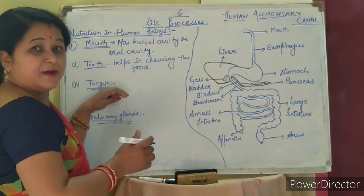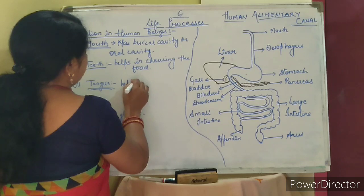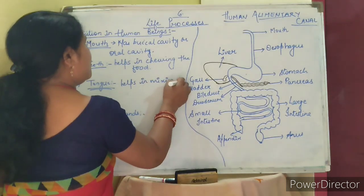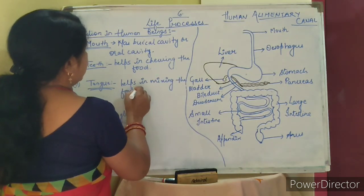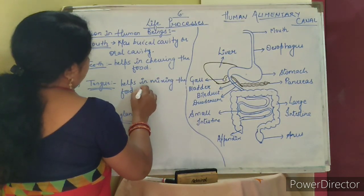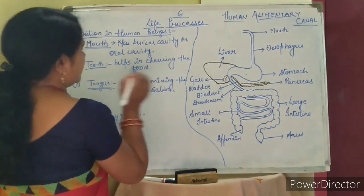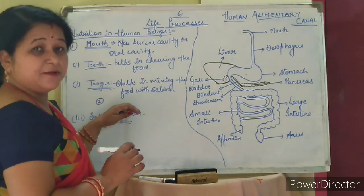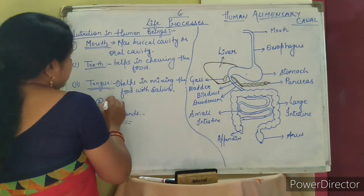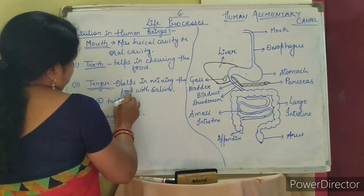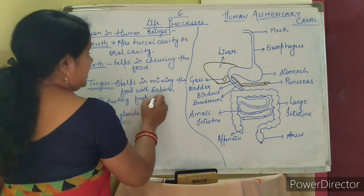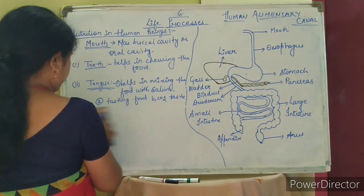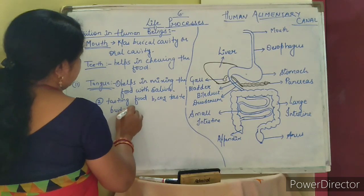Now, tongue. What is the function of the tongue? It helps in mixing the food with saliva. One more function of the tongue is tasting the food, because taste buds are present in it.